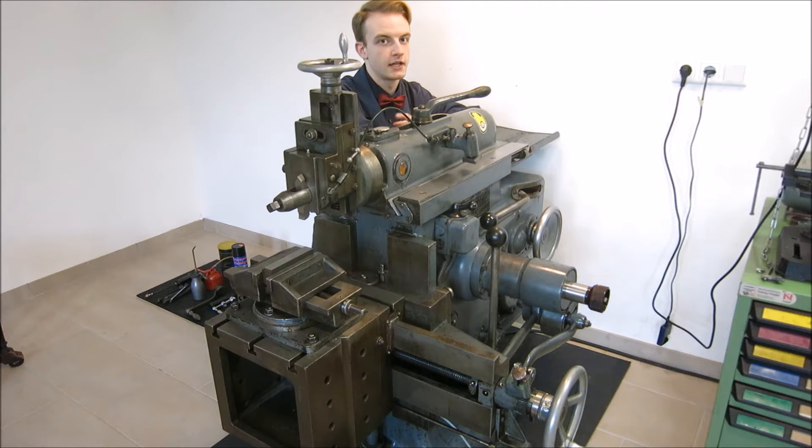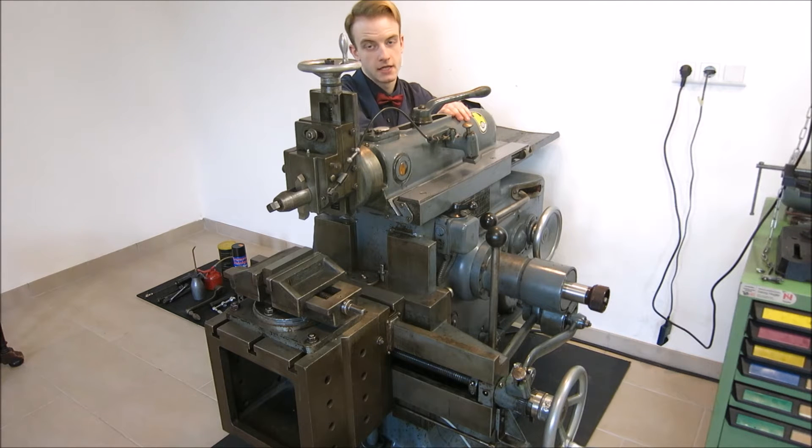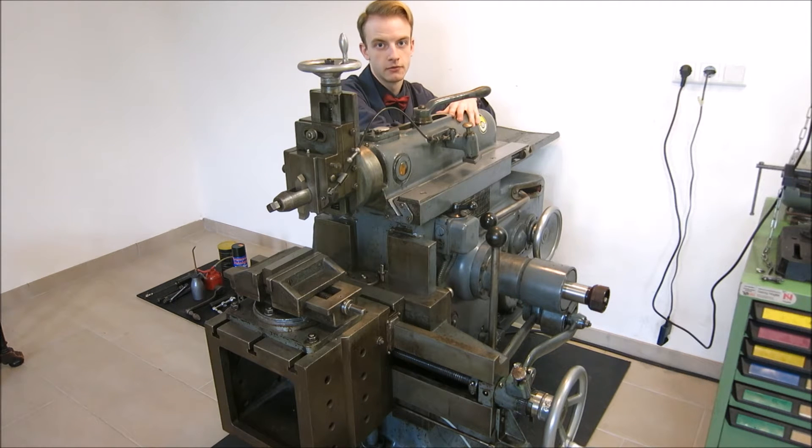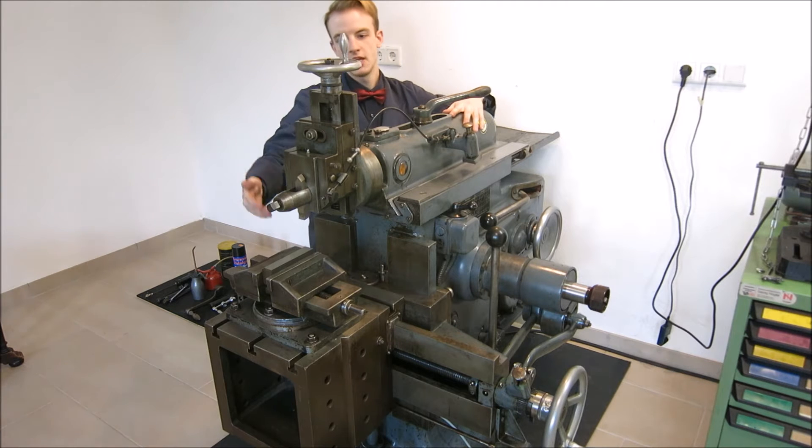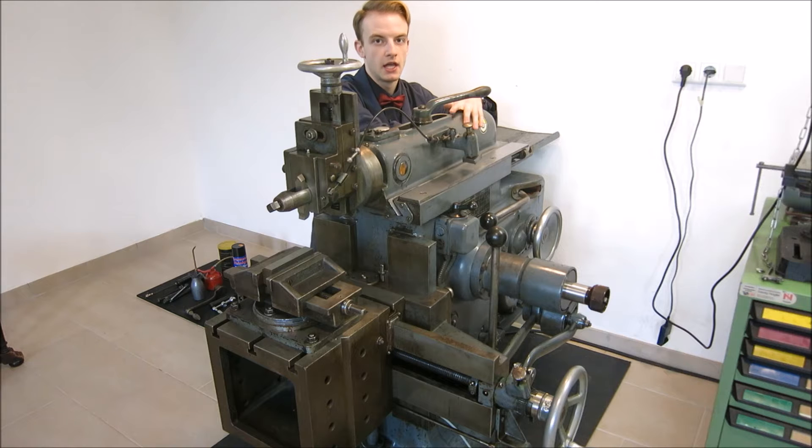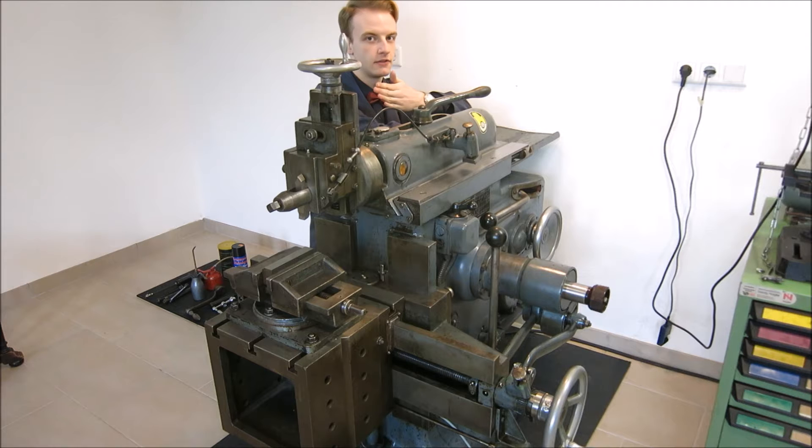Before jumping into the video I'd like to first explain what a Shaper actually is and what it does. A Shaper is used to produce flat surfaces and is often referred to as the granddad of the mill because basically it does the same thing but the principle is a lot simpler than on a mill. On the mill you have a rotating cutting tool which removes the metal. On the Shaper you just have a regular turning tool in the holder and all the Shaper does is move back and forth and advance the cut on each stroke.